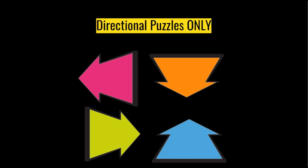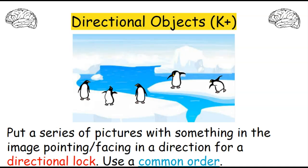The first group of puzzles is directional puzzles only. This is an example of a directional objects puzzle. You can see two brains at the top, meaning it's a mental puzzle that works for either a kit breakout or a digital breakout. This puzzle works by putting a series of pictures with something in the image pointing or facing a direction for a directional lock, using a common order. In this case I have five penguins, each looking either up, down, left, or right, using left-to-right order.